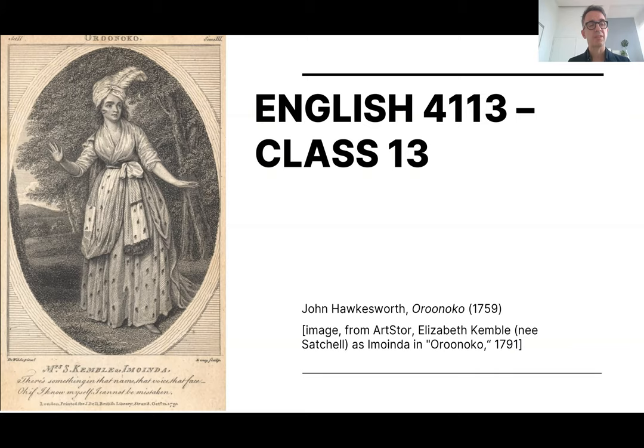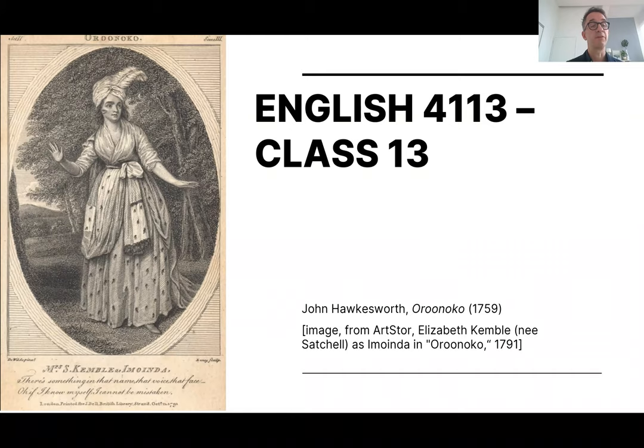Within about 15 years of Behn's publishing Oroonoko and her death, we have an adaptation for the stage of the novel by a man named Southern. That version has both the Oroonoko and Imoinda plot and also a secondary plot, which is a romance plot between rich white people and it's a comedy. So there's a sort of comedy and tragedy side by side in this play, and that's what Hawksworth aims to eliminate in his version.